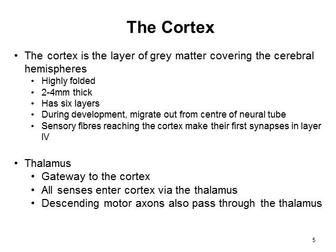The cortex is the layer of grey matter which covers the entire cerebral hemispheres. It's a highly convoluted structure, and that reflects the differentiation and amount of intelligence of the various species. It's between 2 and 4 mm thick and has six layers. During development, cells migrate out from the centre of the neural tube and locate in these different layers. This process is highly regulated to ensure synapses occur in the right places and each layer is correctly defined. Sensory fibres, for example, reach the cortex and make their first synapse in layer 4.